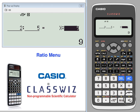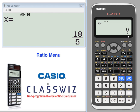Press equals again. The value of X is 18 over 5, or 3.6.